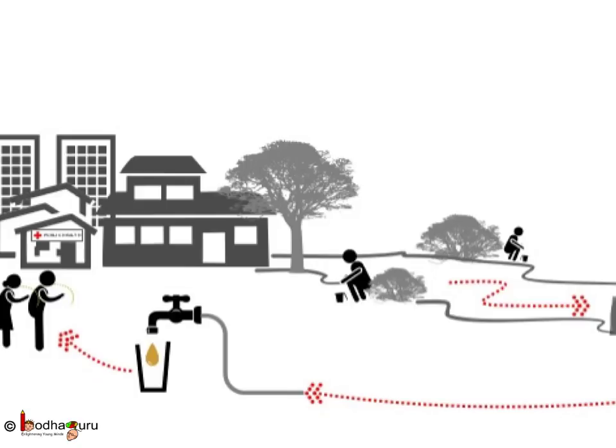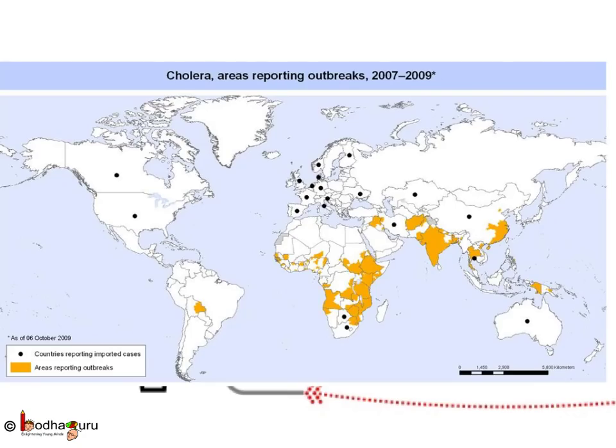Many people defecate in the open, and that feces may get washed by rainwater, contaminating ponds and lakes. Many people then bathe, wash clothes, and wash dishes in those same ponds and lakes, picking up germs. Germs of diarrhea, cholera, and typhoid spread very fast this way, which is why you often hear of these diseases becoming epidemic in villages.